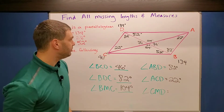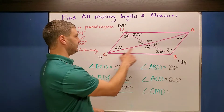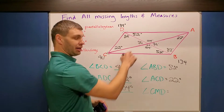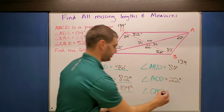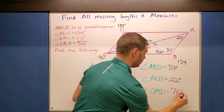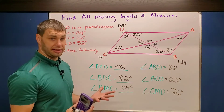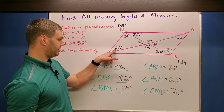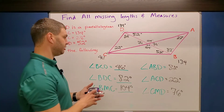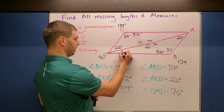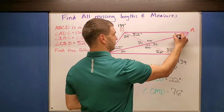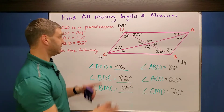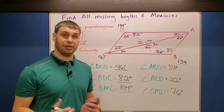Then the last one is CMD. Because of the math I just did to find the middle angles, I know that's going to be 76 degrees. There are a couple others I could have figured out too — for example, the whole angle down here is 46, and if this is 22, then this angle would be 24 degrees. But it didn't ask for that one. This is how you'd find missing measurements in a parallelogram.